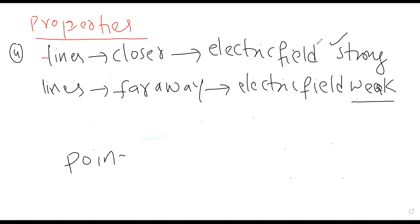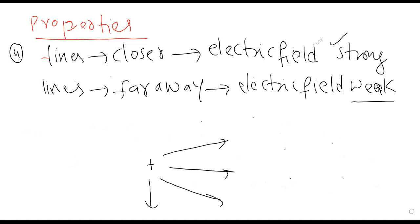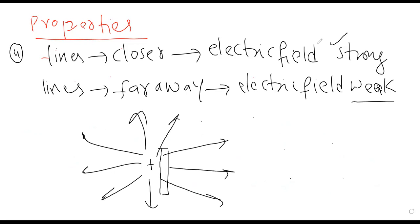Agar isi cheez ko graphically represent karna chahun: hamare paas kisi bhi point charge se lines of forces bahar nikal rahi hain — positive le rahe hain. Ab ek object rakhte hain qareeb — us object se chaar lines pass ho rahi hain. Ab usi object ko thoda door rakhein — ab teen lines pass ho rahi hain. Yani qareeb lane se chaar lines pass ho rahi hain, door jaane se teen lines. It means qareeb lane se field strong ho rahi hai aur door jaane se field weak ban rahi hai.